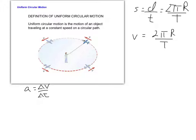Because there is an acceleration, there must be a net force. Let's look at the airplane when it's at the rightmost point of its motion, viewed from the side. The forces acting on the airplane are its weight, lift (because it has wings), and the tension in the rope.